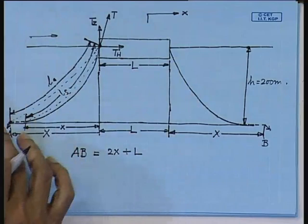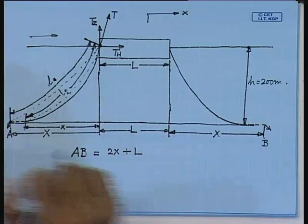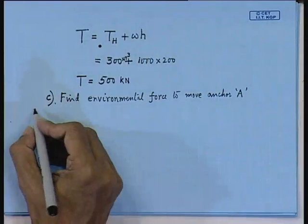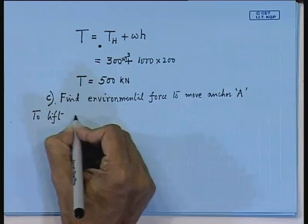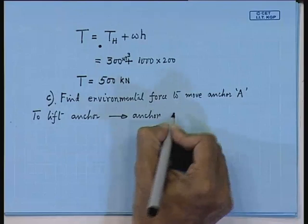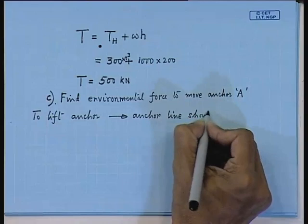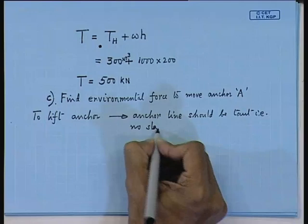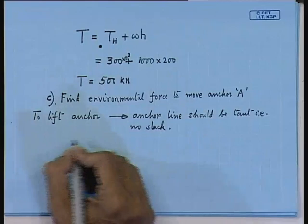So, L minus L_s — what is the value of L minus L_s? We have to start from this. To lift the anchor, this anchor line should be taut — that is, no slack. This is actually the hint in the problem. That means L minus L_s equals 0.